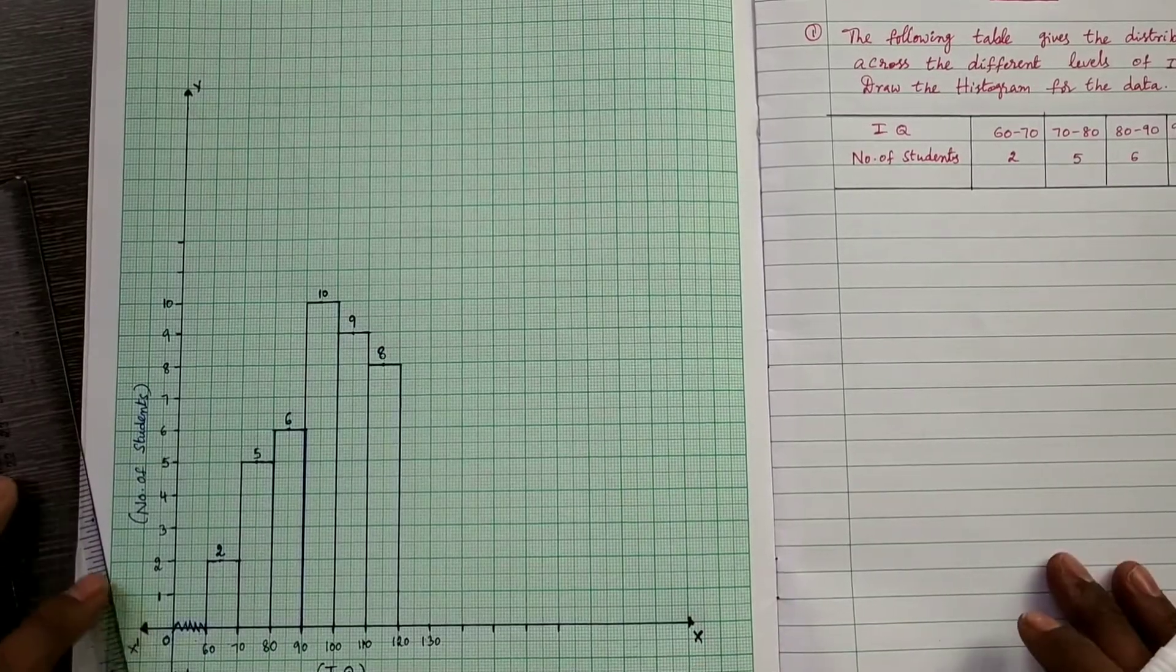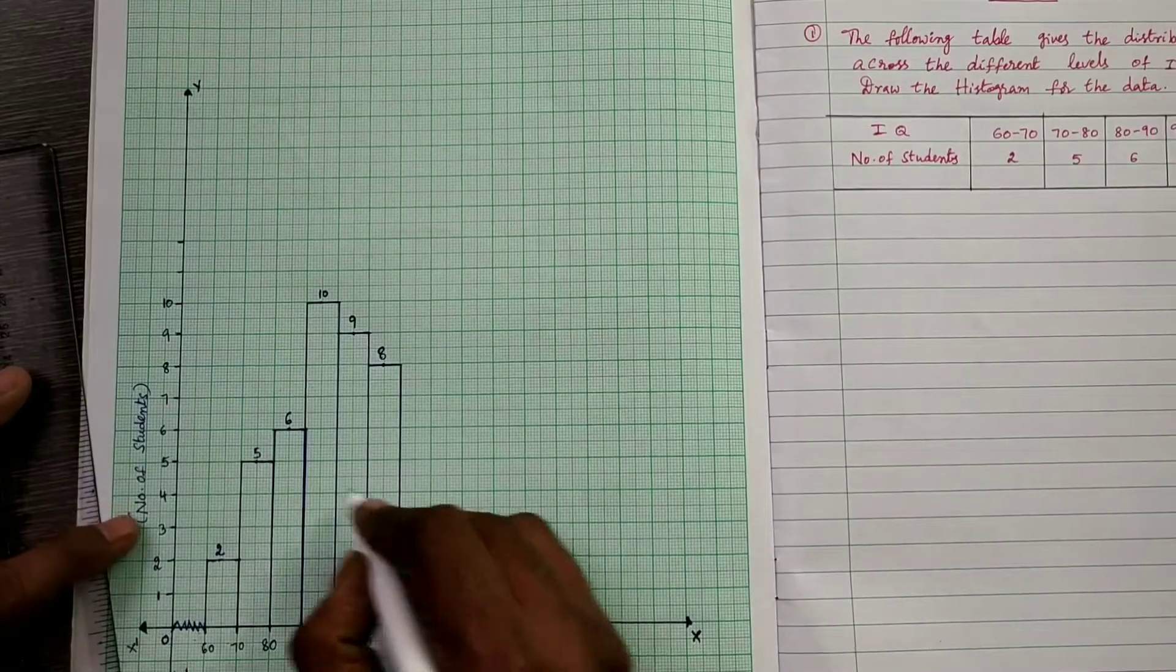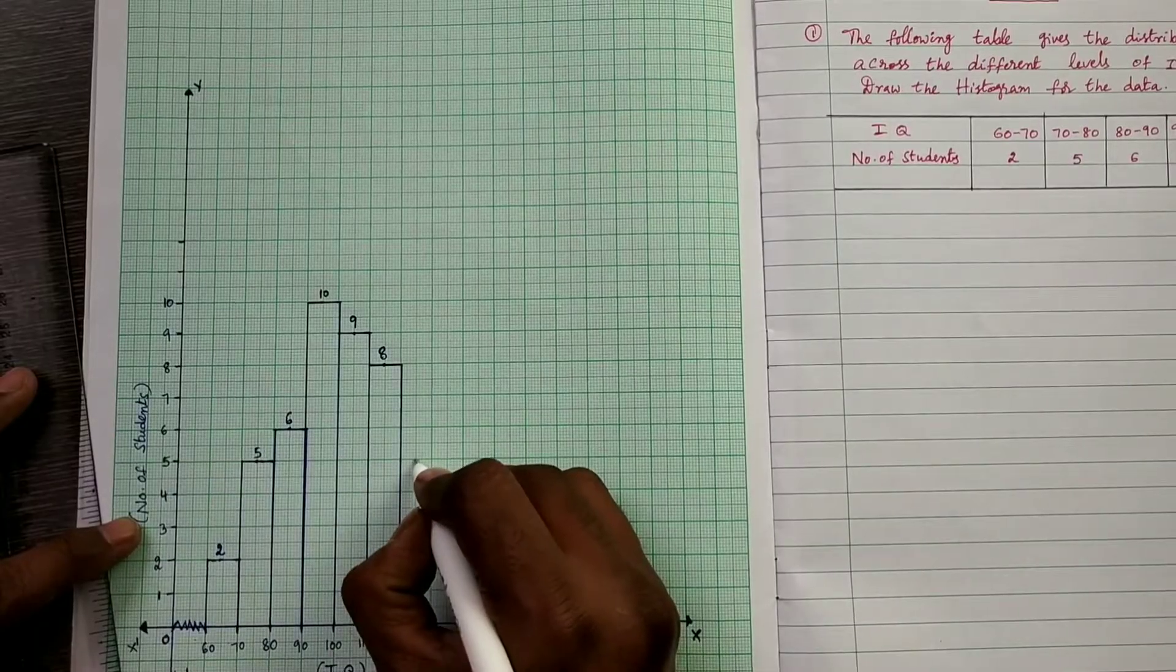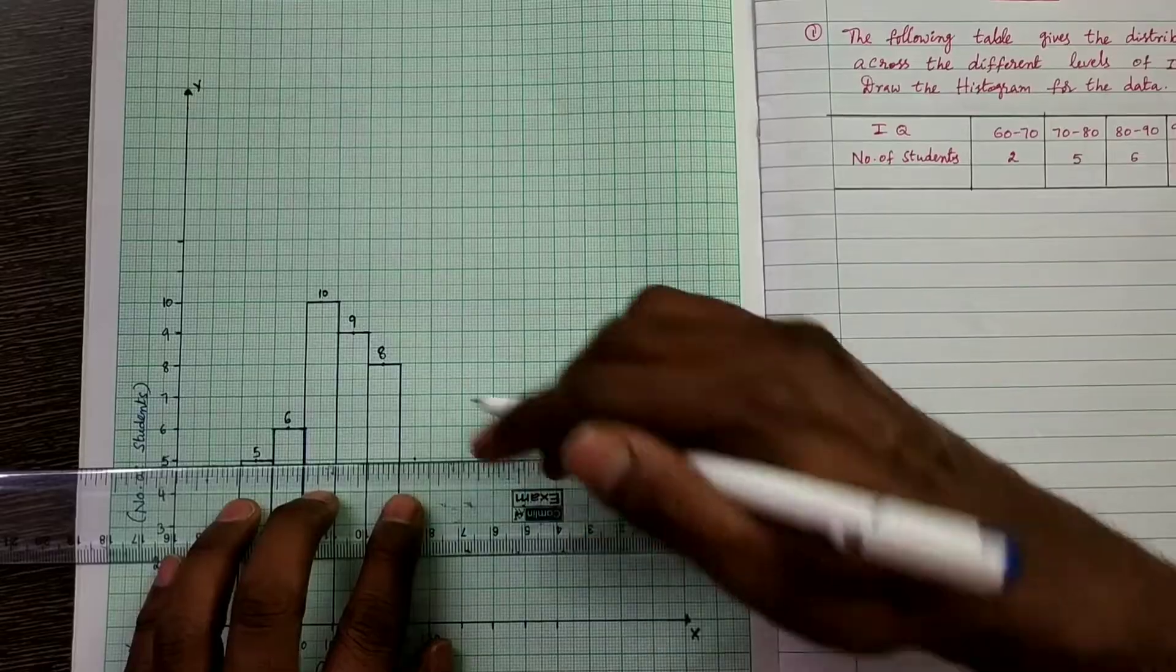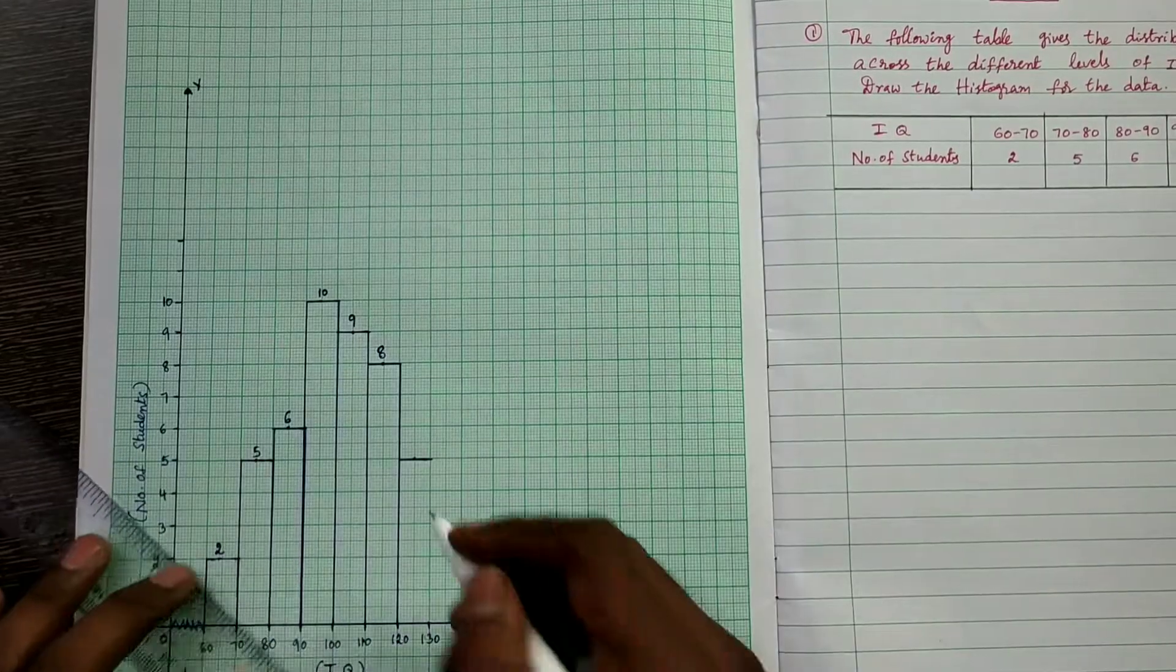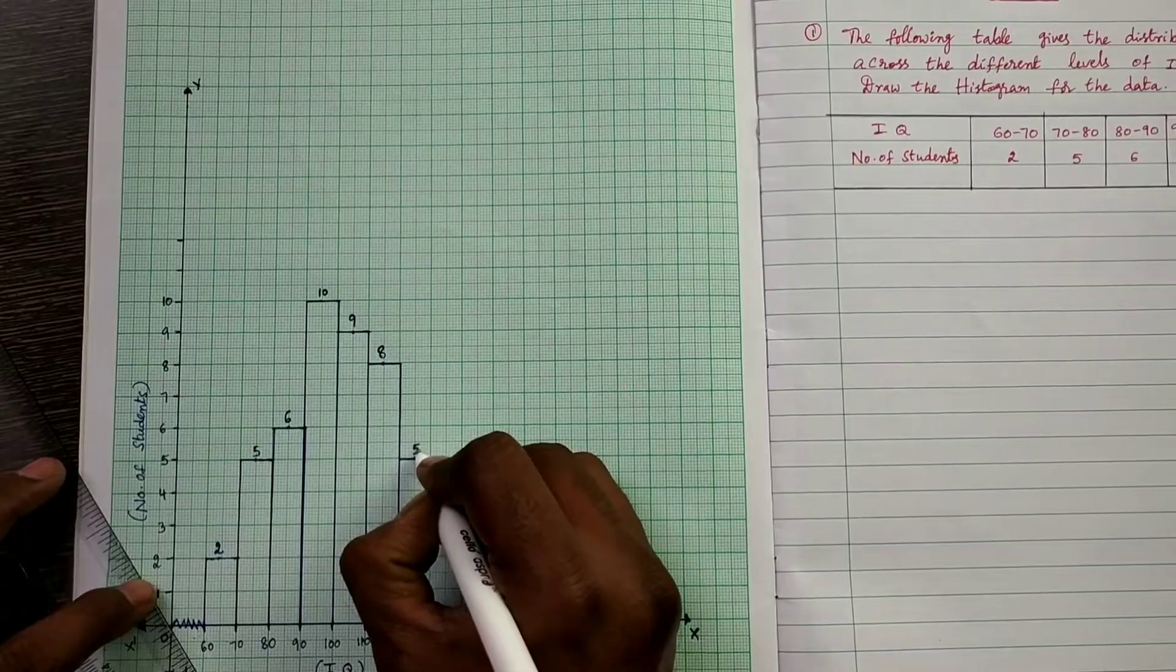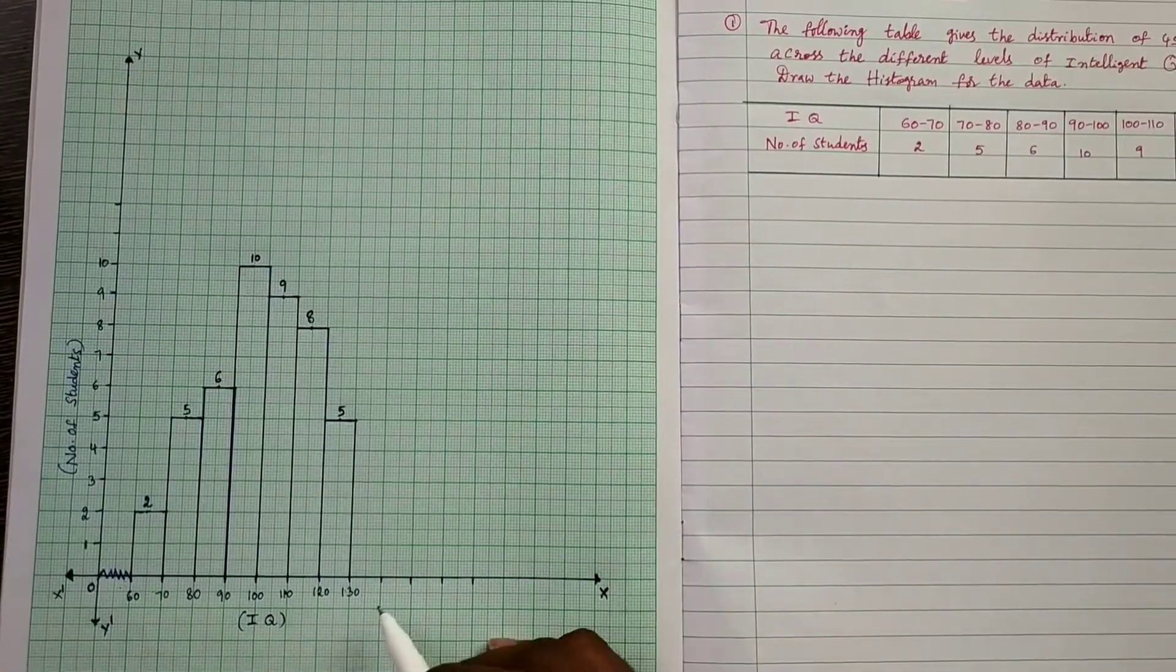Next, 120 to 130, that is 5. 120 to 130, that is 5. 120 to 130, that is 5, and join to x-axis. So this is the required histogram.